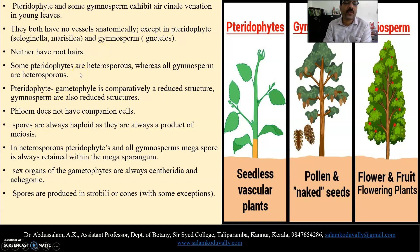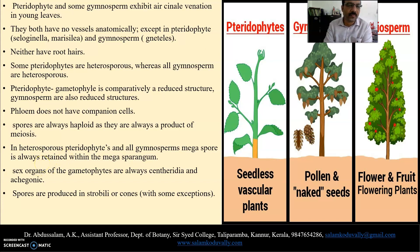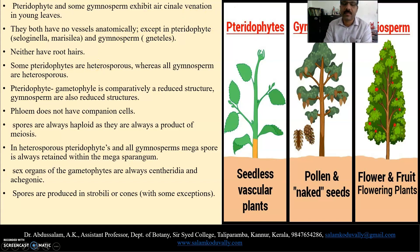Some pteridophytes are heterosporous, whereas all gymnosperms are heterosporous. The pteridophyte gametophyte is comparatively a reduced structure, and gymnosperms also have reduced structures. Phloem does not have companion cells. Spores are always haploid, being products of meiosis. In heterosporous pteridophytes and all gymnosperms, the megaspore is always retained within the megasporangium. The sex organs of the gametophytes are antheridia and archegonia. Spores are produced in strobili or cones.